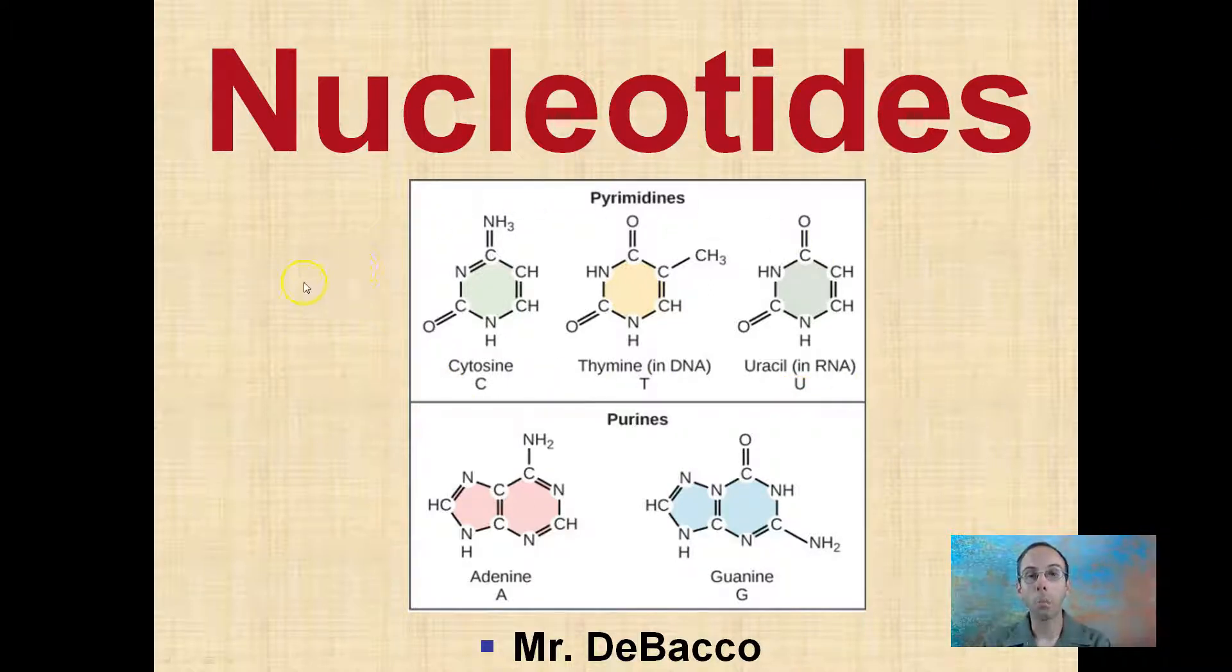We're going to define our pyrimidines and our purines, our uracils, thymine, cytosine, adenine, and guanine, where we'll make up our nucleotides.